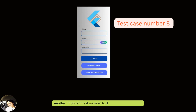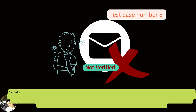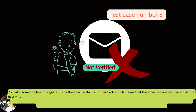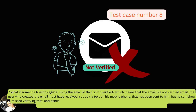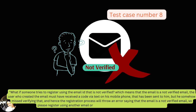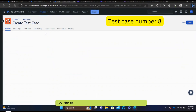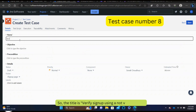Another important test: what if someone tries to register using an email that is not verified? The user may have received a verification code via text message but missed verifying it. The registration process should throw an error saying the email is not verified — please register using another email or first verify this email and then sign up. The title: 'Verify sign up using a not verified email.'